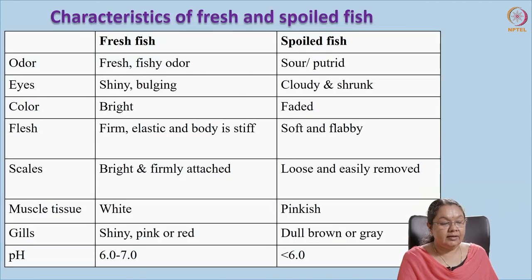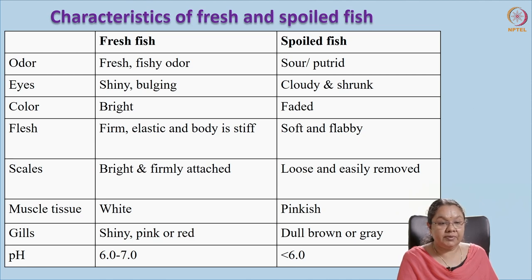This tabulated slide shows sensory parameters — odor, eyes, color, flesh, and scales — by which we can discriminate whether the fish is fresh or spoiled. For example, when considering odor, in fresh fish it will be a fishy odor, but in the spoiled fish it will turn to putrid or sour odor because of the production of lactic acids and degradation of protein molecules. The eye will be shiny and bulging in fresh fish but will become cloudy and depressed in spoiled fish. The color will be bright in fresh fish but will become faded. On the flesh, when pressure is applied with the thumb, the impression will be retained in the spoiled fish, whereas in fresh fish the body will be firm and elastic. Scales will be bright and firm in fresh fish but will come out easily in spoiled fish.